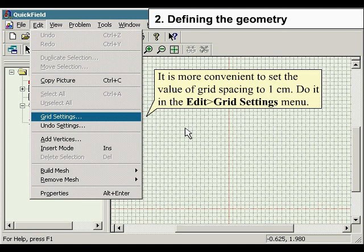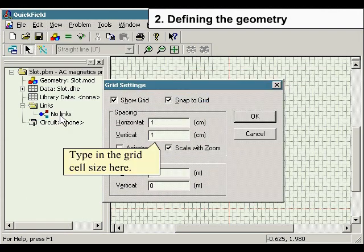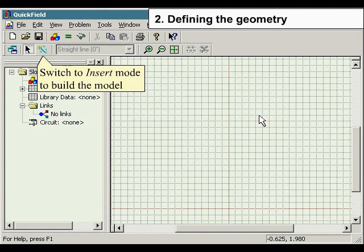It is more convenient to set the value of grid spacing to 1 cm. Do it in the Edit menu and select Grid Settings. Type in the grid cell size here. Switch to Insert mode to build the model.